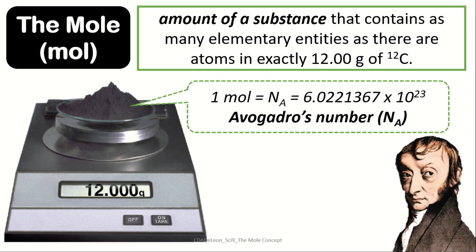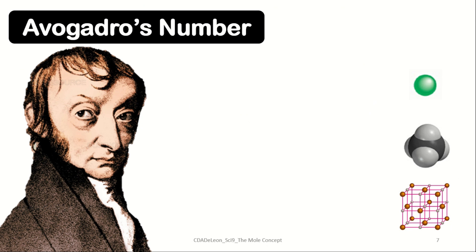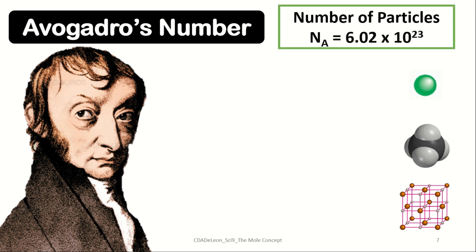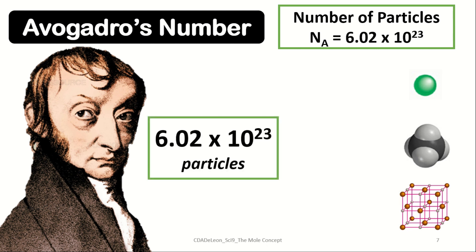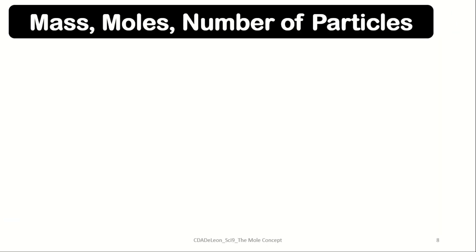Avogadro's number is named after Amedeo Avogadro, an Italian scientist. It is a constant, meaning it is always fixed. Avogadro's number refers to the number of particles present in one mole, which is 6.02 × 10²³. The type of particle depends on the nature of the chemical substance: for elements we use the term atoms, for covalent compounds we use molecules, and for ionic compounds we use ions.